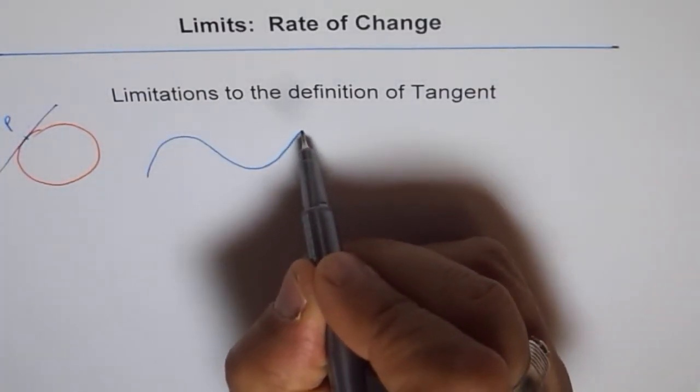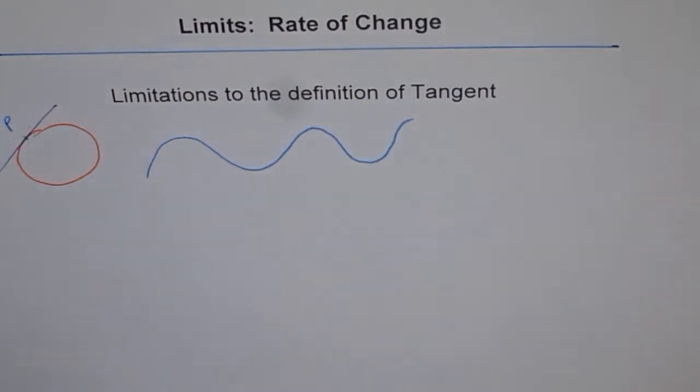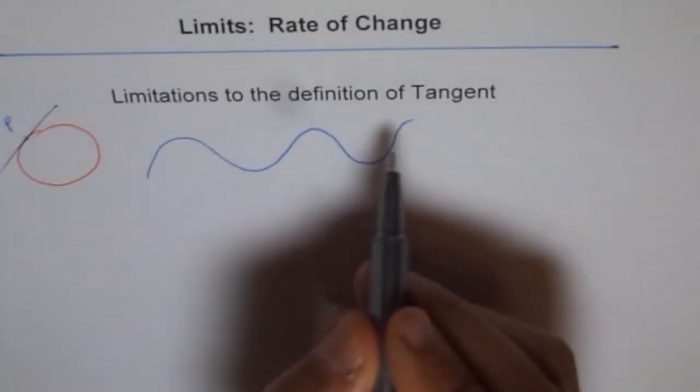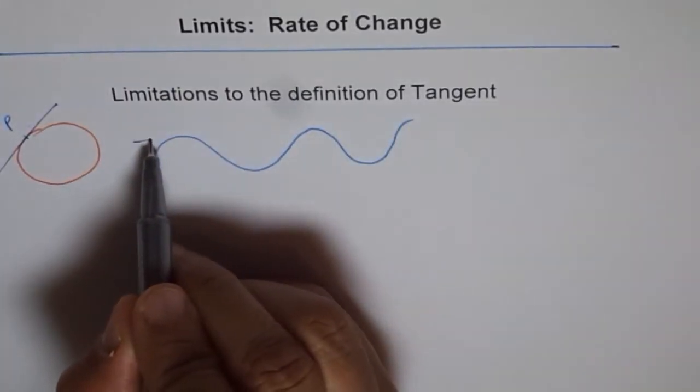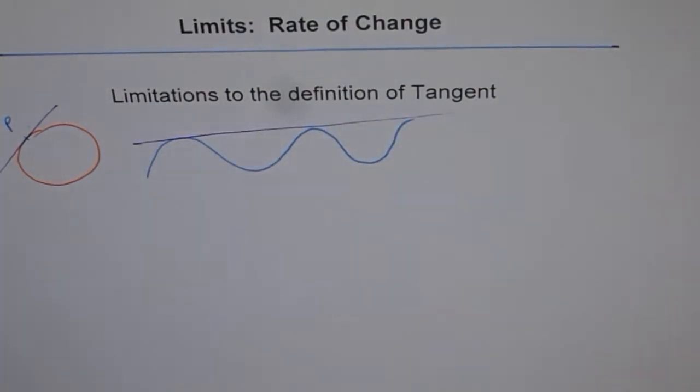For example, if I have a tangent, if I have a curve like this, then you could have a tangent which could touch this curve like a sine function. Think about it. It could touch this curve at many points. So that is one possibility.